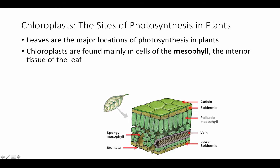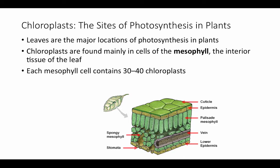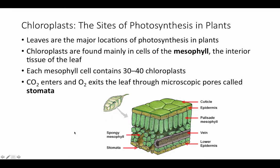Each mesophyll cell contains between 30 and 40 chloroplasts. Carbon dioxide enters and oxygen exits through tiny microscopic pores called stomata — singular stoma, literally meaning mouth. These little mouths can open and shut to either let carbon dioxide and oxygen pass or to prevent them from passing. This is also how water gets out of the leaves in the process of transpiration, drawing water up through the system of vessels within the plant. The stomata are basically the communication between the leaf tissue and the environment.